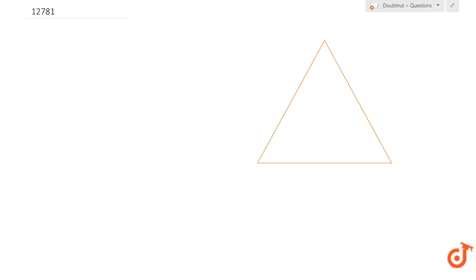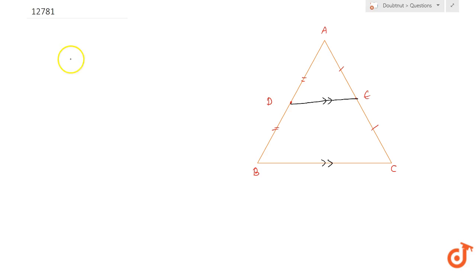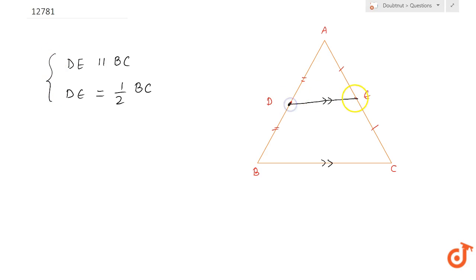So what do we know about the Midpoint Theorem? Midpoint theorem states that — suppose I have a triangle ABC. D is the midpoint of side AB, so AD is equal to DB. Similarly, E is the midpoint of side AC, so AE is equal to EC. Then the midpoint theorem states that the line joining the midpoints of two sides is parallel to the third side, which in this case is BC, and is half of it. So line DE will be parallel to BC and the length of DE will be equal to half the length of BC.